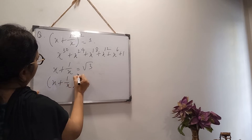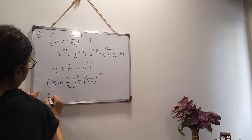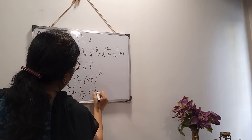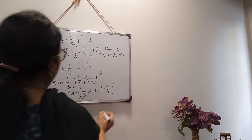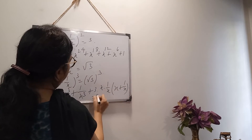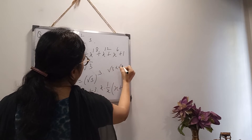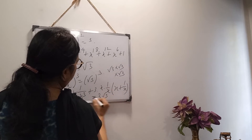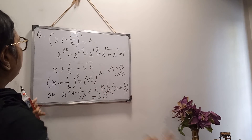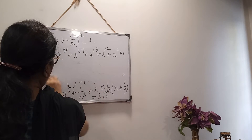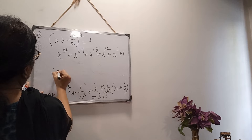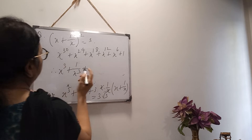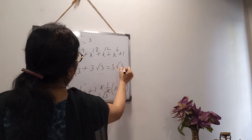After cubing both sides, we apply the (A+B)³ formula: A³ + B³ + 3AB(A+B). The right hand side: (√3)³ = √3 × √3 × √3 = 3√3. So we get x³ + 1/x³ + 3(x + 1/x) = 3√3. The 3(x+1/x) term: 3 × √3 = 3√3. So 3√3 is cancelled from both sides. Therefore x³ + 1/x³ = 3√3 − 3√3 = 0.